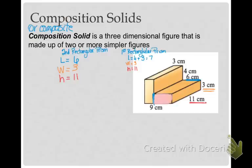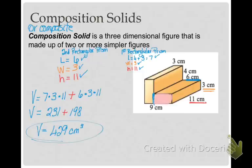In a composition or composite solid, what you do is you find the volume of both simpler figures and you add them together. The volume of my first prism is length times width times height, and I'm going to add that to the volume of my second prism, which is six times three times 11. When I do the math, I get the volume of this composite figure is 429 centimeters cubed.